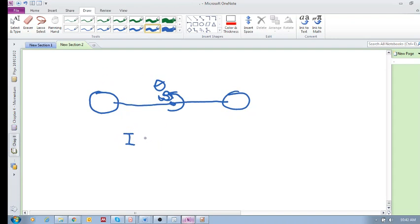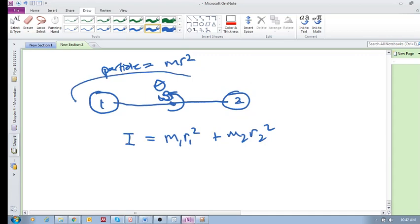We said we know that the rotational inertia for a particle is m r squared. So we said, well, all we need to do is add up the rotational inertia of this guy plus the rotational inertia of that guy. So if that is 1 and that is 2, then we need m1 r1 squared plus m2 r2 squared. We're summing up the rotational inertia of every single particle in our object.